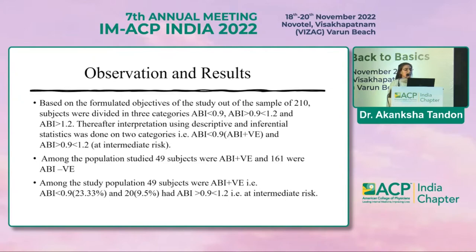Among the population studied, 49 subjects were ABI positive and 161 were ABI negative. Out of those 161, 20 patients — that is 9.5% — had an ABI value between 0.9 and 1.2, placing them at intermediate risk of developing CAD in the future.